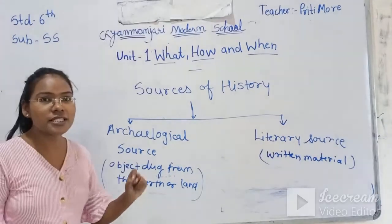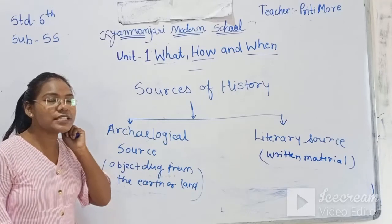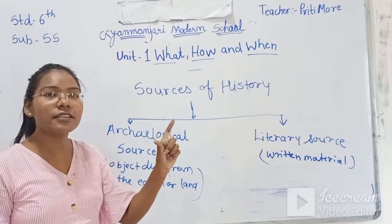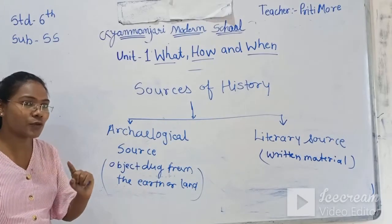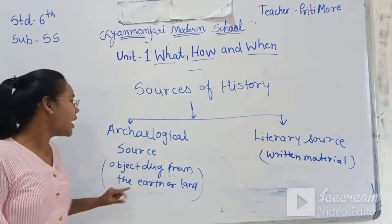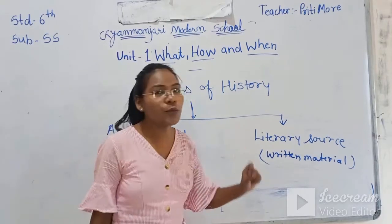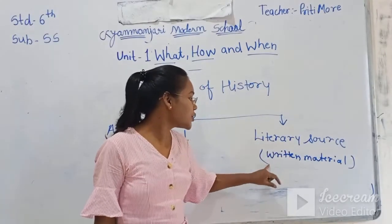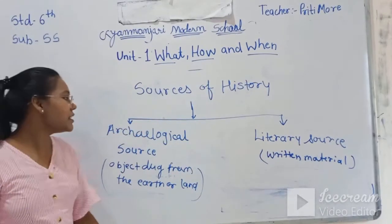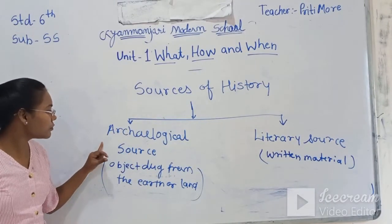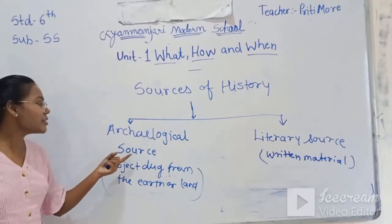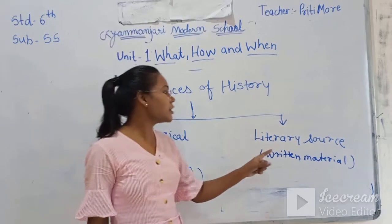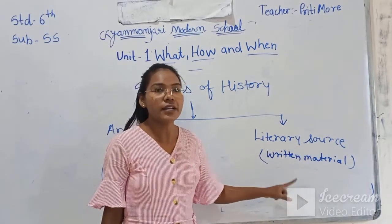In the archaeological source, objects like monuments and coins are there — which archaeologists have excavated from the earth. For example, monuments like the Taj Mahal, Bibi Ka Maqbara, and Qutub Minar give us knowledge of history. The written sources were not available at that time. The literary source means books, biography, autobiography — that everything you will see in the literary source. You will see in detail what material comes in the archaeological source and what comes in the literary source.